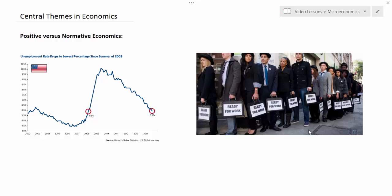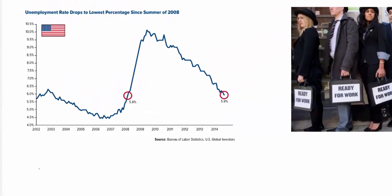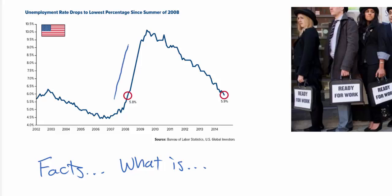The first theme I want to talk about is the distinction between what we call positive and normative economic statements. Positive economics is that which explores the realm of facts — in other words, when making a positive economic statement, an economist is talking about what is in the economy. For example, we have a graph showing that the United States unemployment rate remained stable for many years in the early 2000s, then increased from 2007 through 2009, and then decreased from 2009 until 2015. This is a fact; there is data to support it.